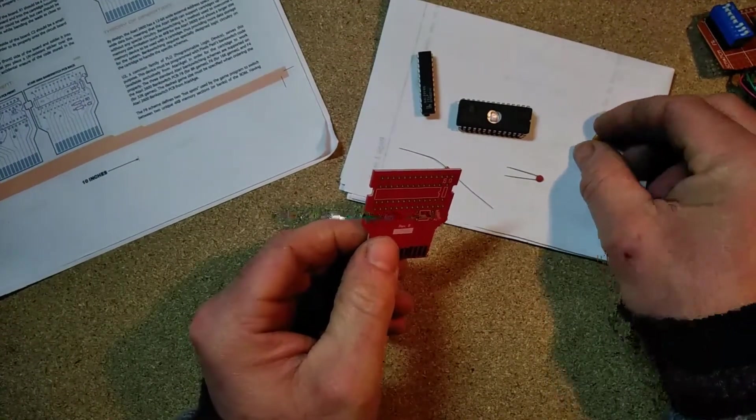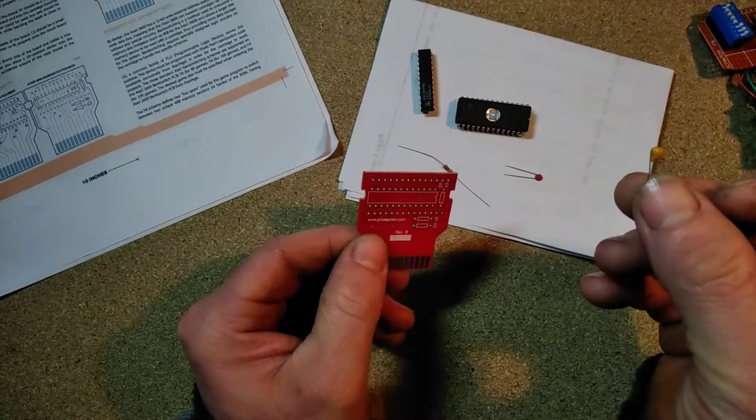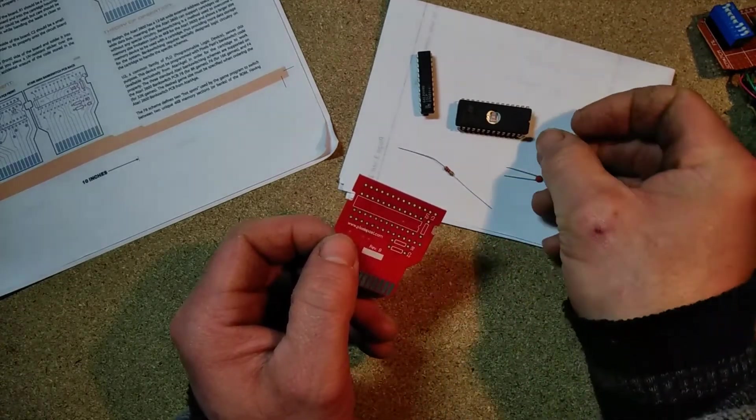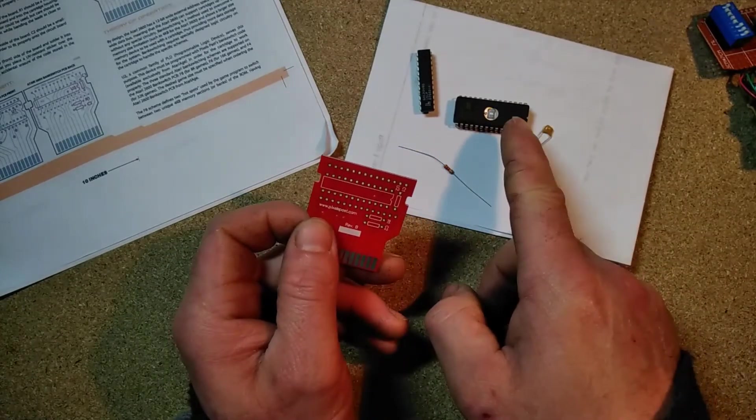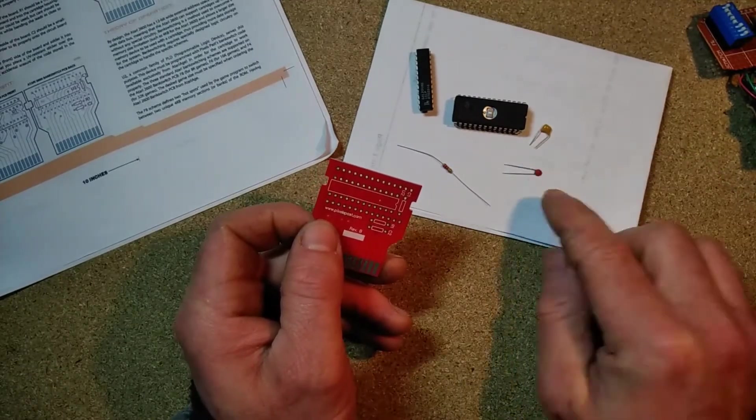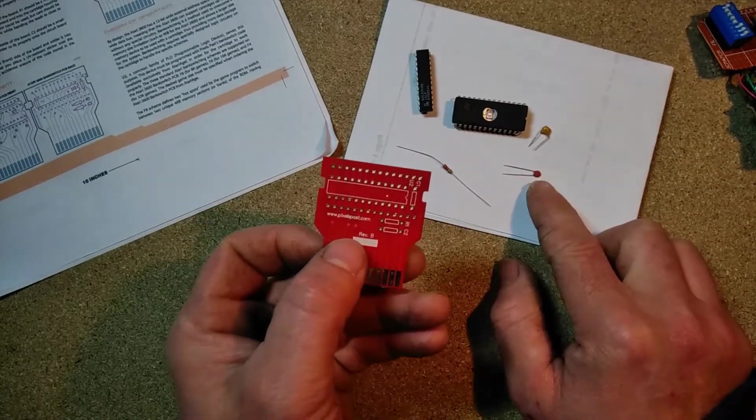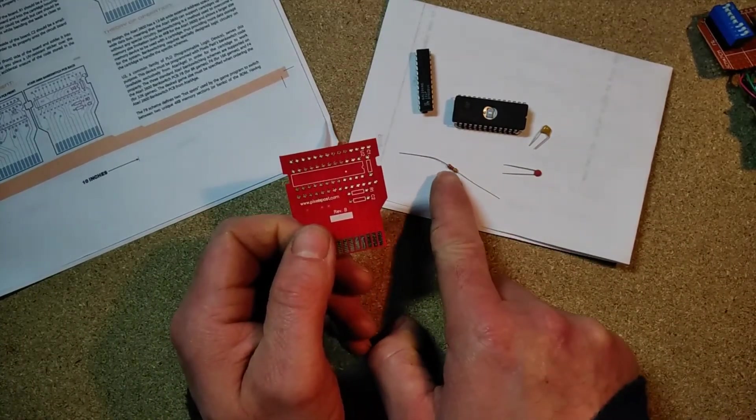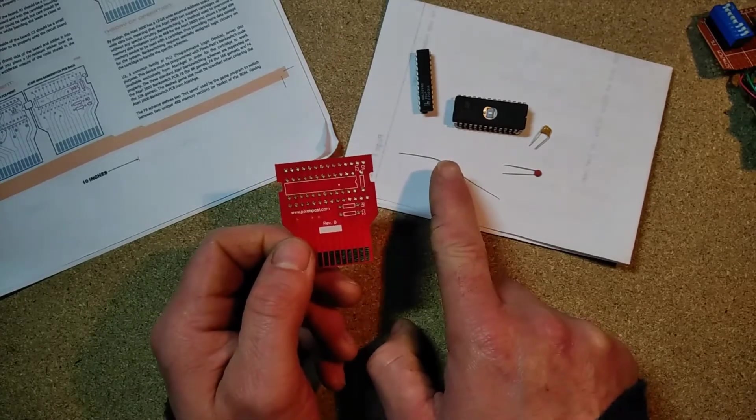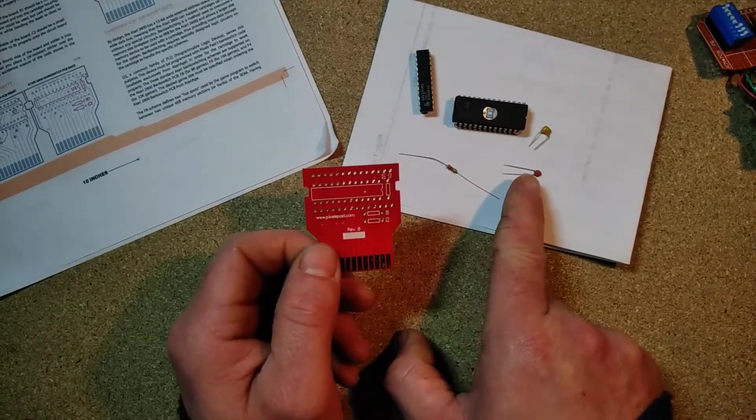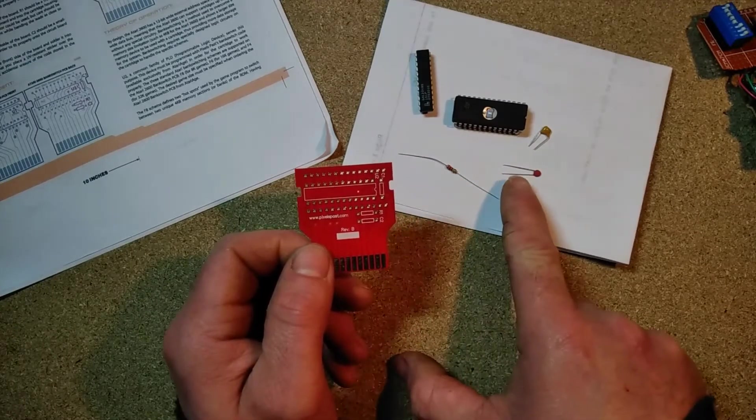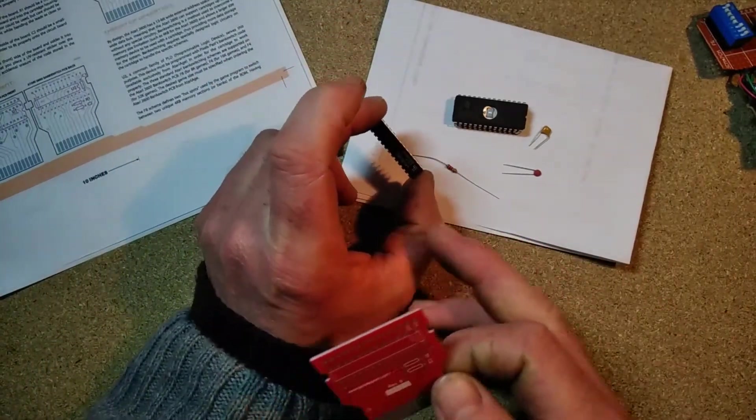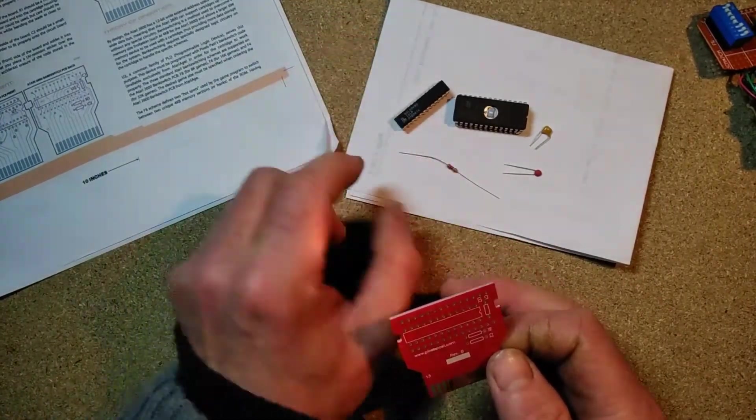There is a little 0.1 microfarad capacitor which is used as a decoupling capacitor for this guy to smooth out voltages and stop any potential errors. Then there is a 100 picofarad capacitor used here. When used in conjunction with this resistor, it makes up what's called an RC timer or resistor-capacitor timer, and its function is to provide a little delay of only a couple hundred nanoseconds.